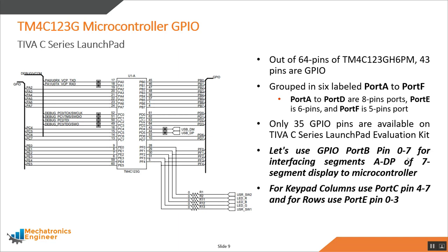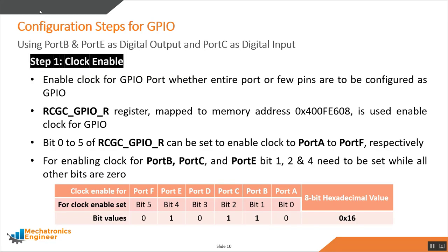GPIO port B is used for interfacing the seven segment display, pins 4–7 of port C for the keypad columns, and pins 0–3 of port E for the keypad rows. The first configuration step is clock enable via the clock gating control register. Bits 0–5 enable clock on ports A–F respectively. Since ports B, C, and E are used, bits 1, 2, and 4 are set, giving a hexadecimal value of 0x16.